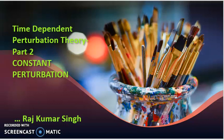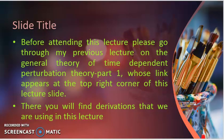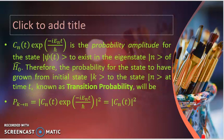In the first part, we dealt in detail about the general theory of time-dependent perturbation theory. In this lecture, we will talk about constant perturbation as an application to the general theory. Before attending this lecture, please go through my previous lecture on the general theory of time-dependent perturbation theory part 1, whose link appears at the top right corner of this lecture slide, where you will find derivations that we are using here.